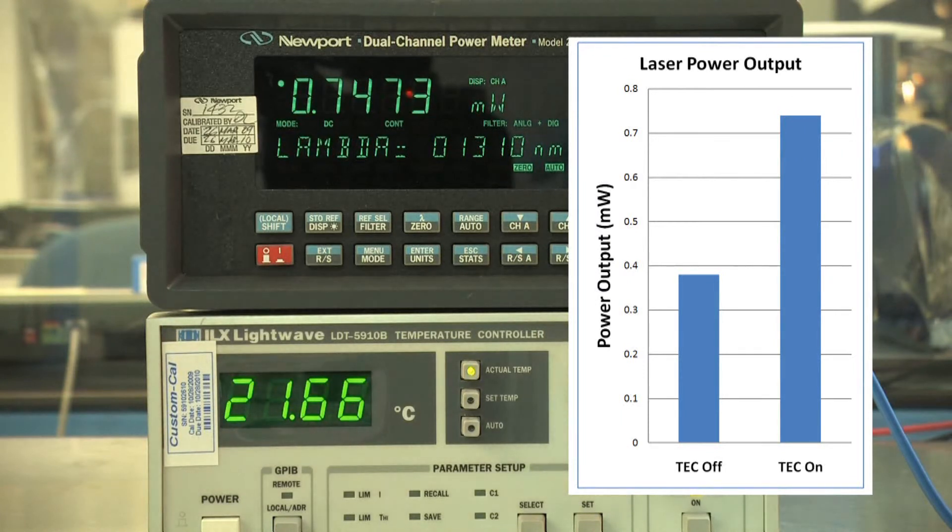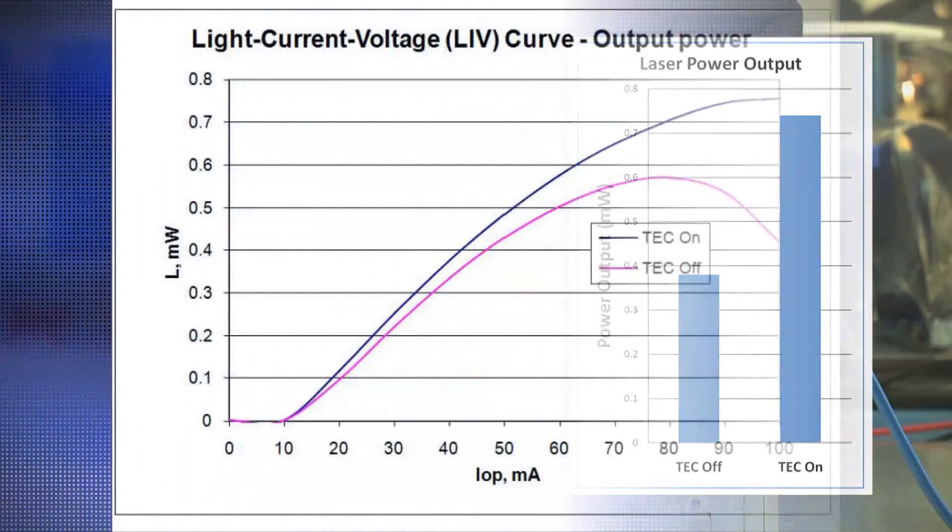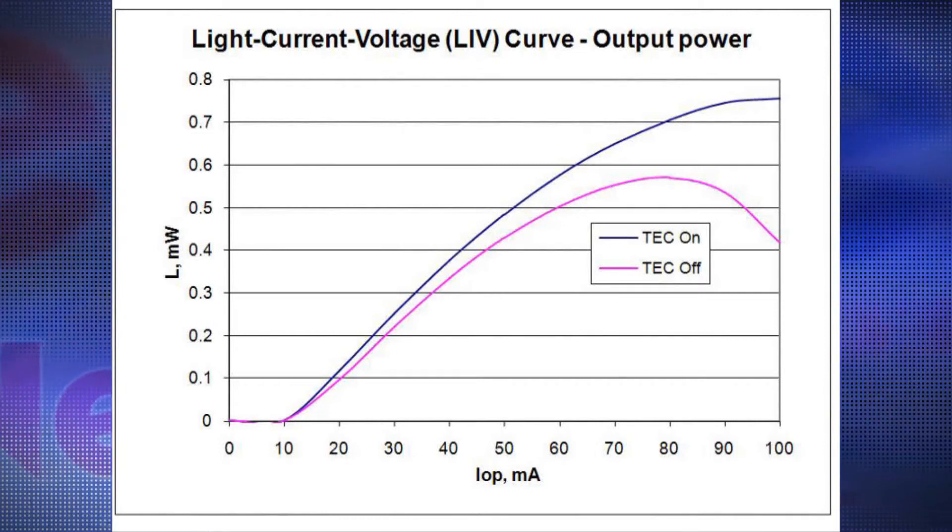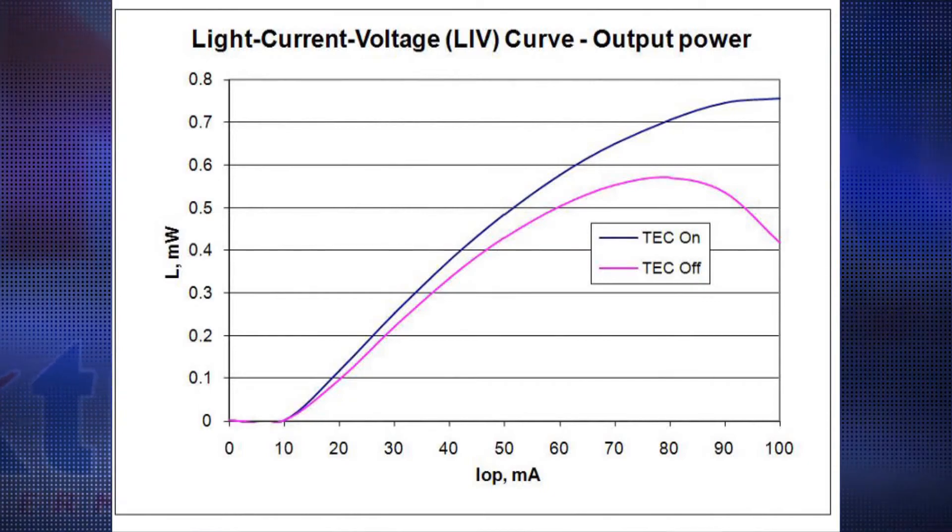The drive current for the laser diode was then increased in 10 milliamp steps up to 100 milliamps with the TEC turned off and on to create this LIV curve. It clearly shows the higher output level achieved with the TEC turned on. Also, the embedded TEC has the ability to hold output levels steady at higher currents.